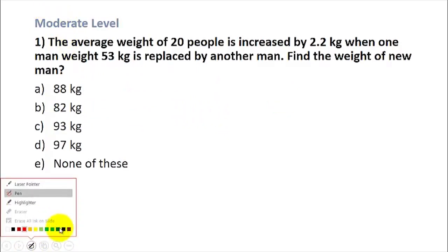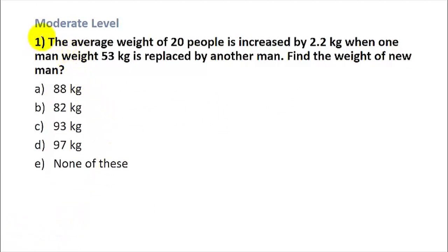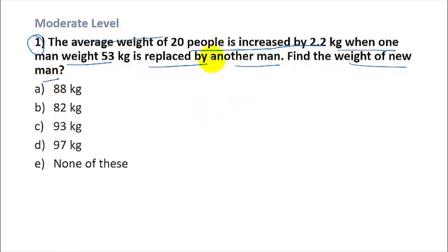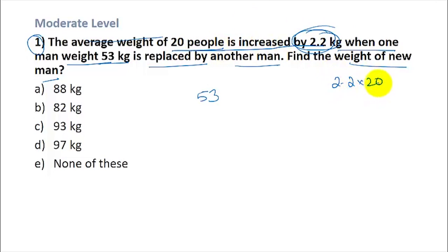Moderate level, Question 1: The average weight of 20 people is increased by 2.2 kg when one man weighing 53 kg is replaced by another man. Find the weight of the new man. The increase for all 20 people is 2.2 × 20 = 44. So the new man's weight is 53 + 44 = 97. The answer is option D.